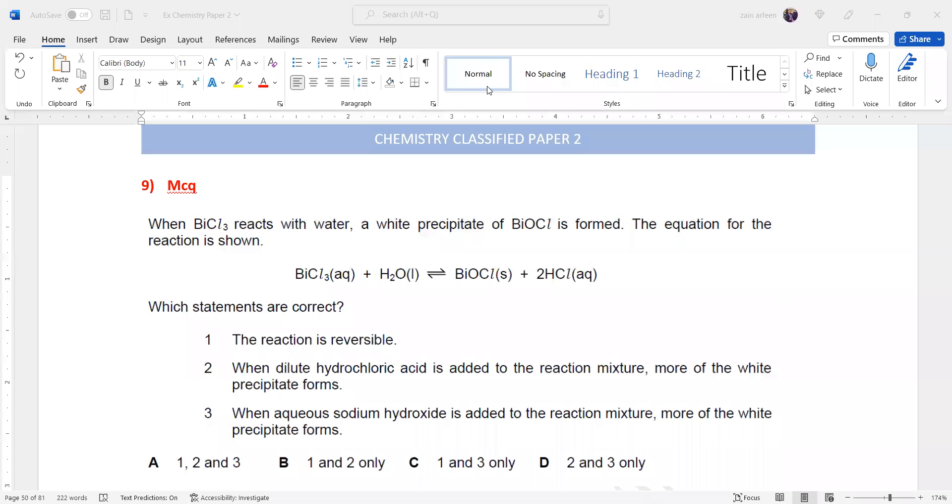In this question, when BiCl3 (bismuth trichloride) reacts with water, a white precipitate of BiOCl is formed.